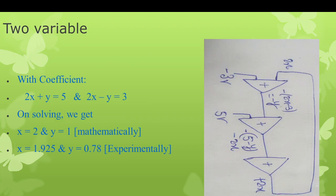For three variables without coefficients, I use equations: x - y + z = 2, -x - y + z = -1, and x + y + z = 3. Mathematically, x = y = z = 1. Using the analog computer with five op-amps, the experimental results are x = 1.010 (accurate to within about 2%), y = 0.92, and z = 0.83. While y is close and z is near, they all satisfy the mathematical operation.